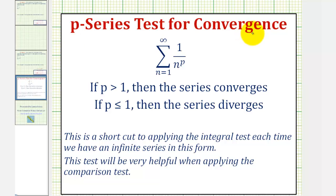The p-series test tells us that if we have an infinite series in this form here, where we have the summation from n equals one to infinity of one divided by n raised to the power of p, if p is greater than one, then the series converges, and if p is less than or equal to one, then the series diverges.